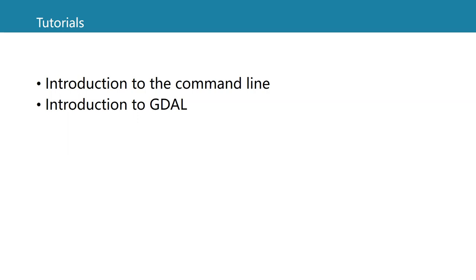In this module, you need to complete two tutorials. The first is an introduction to the command line, and the second is an introduction to GDAL, where you use GDAL from the command line. For the first tutorial, you can use the DOS emulator — the link is provided in the tutorial — or you can use a command line from your operating system. For the GDAL tutorial, you can use the OSGeo4W prompt provided with QGIS, or another prompt where GDAL is installed. Instructions for installing QGIS are also provided.